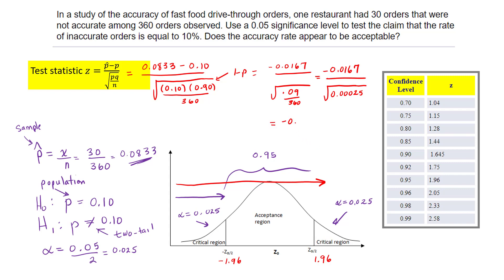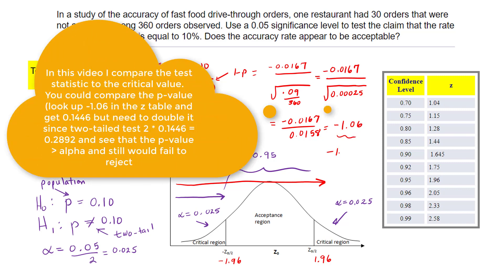Taking the square root of the denominator gives 0.0158. So negative 0.0167 divided by 0.0158 equals negative 1.06. I rounded from -1.0569, and you always round to two decimal places to match the table.